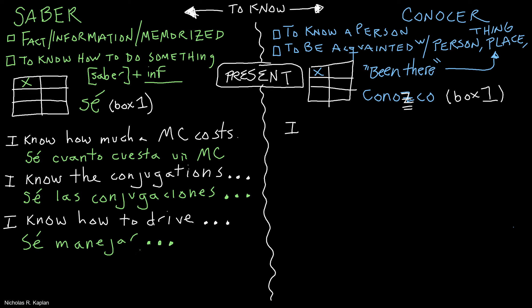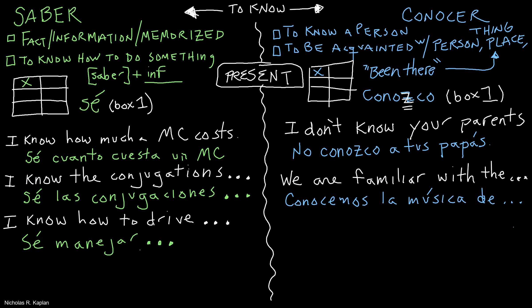Let's look at examples with conocer in the present tense. I don't know your parents. Like, I've never met your parents. No conozco a tus papás. Or you could say, we are familiar with the music of Cuba. Conocemos la música de Cuba. We've heard it, we're familiar with it, we're acquainted with it. I'm not saying I know a fact about it, just that I'm familiar with it.